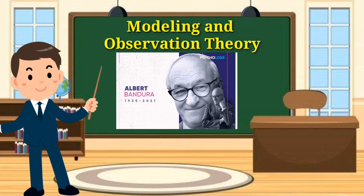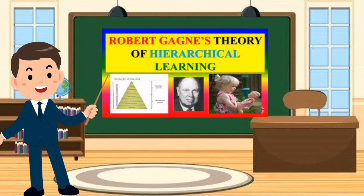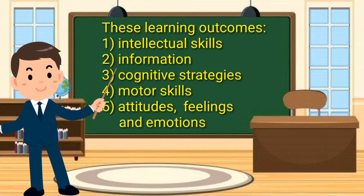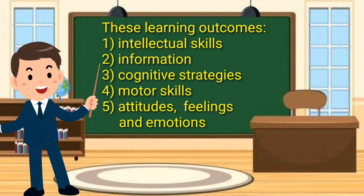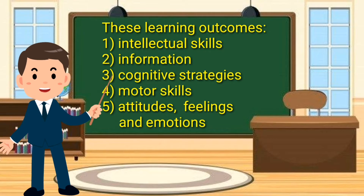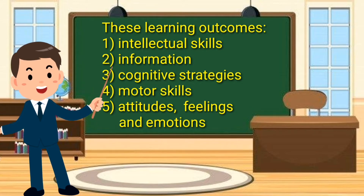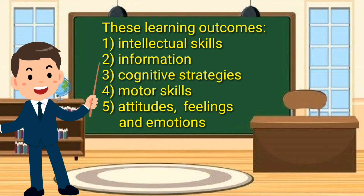Albert Bandura's modeling and observation theory is also related to behavior. Among the behaviorists, Robert Gagné's hierarchical learning, or sets of behavior in five learning outcomes, became classic examples. These learning outcomes include: number one, intellectual skills — knowing how to categorize, use symbols, form concepts, and problem-solve; number two, information — knowing facts, dates, and names; number three, cognitive strategies or learning skills; and number four, motor skills.